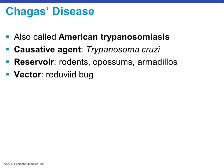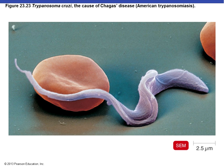Chagas disease causes trypanosomiasis. The causative agent is Trypanosoma cruzi. The reservoir includes rodents, possums, and armadillos. The vector is the reduviid bug, also called the kissing bug, because it hangs around the outside of the mouth — once it bites you, you become infected.